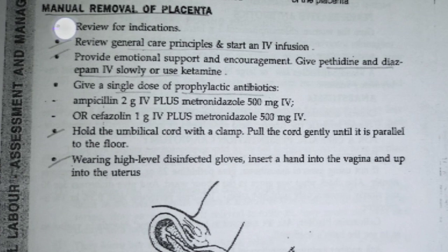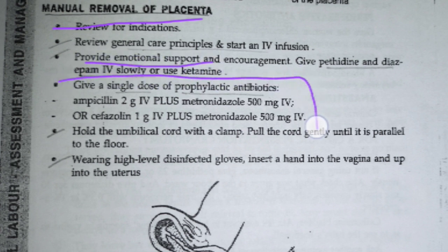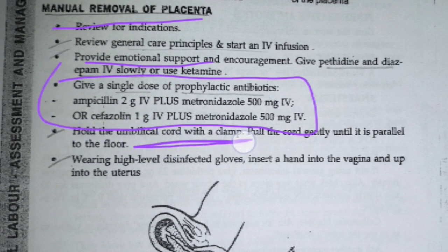For manual removal of placenta, before the procedure we perform things like providing emotional and medical support, providing medications prescribed by the doctor, and arranging the equipment required for the treatment. Safety measures are very important. After arranging all these, we will perform the removal of placenta, which is done in three different ways based on the type of placenta present inside.